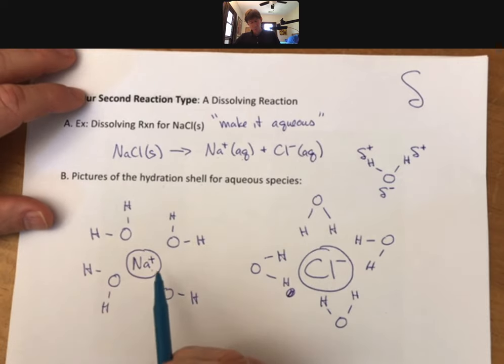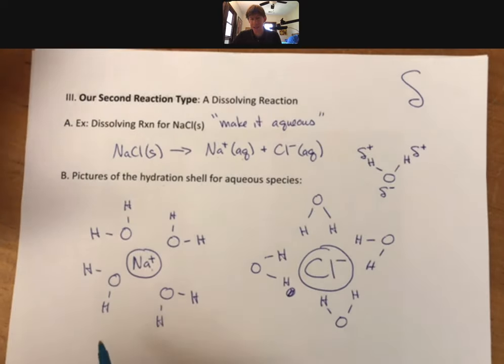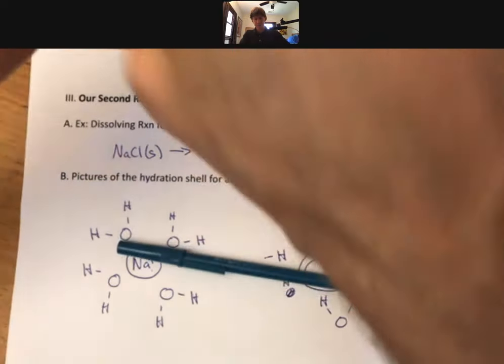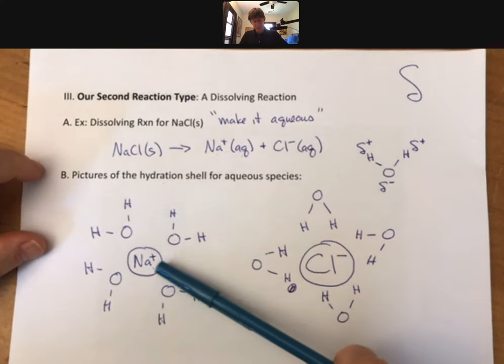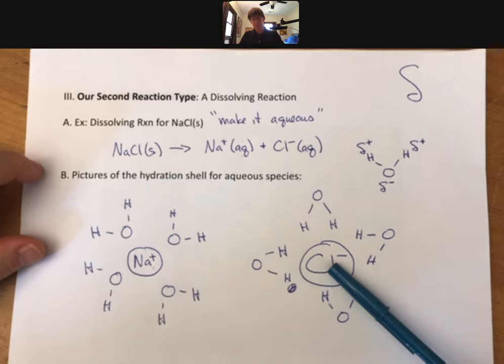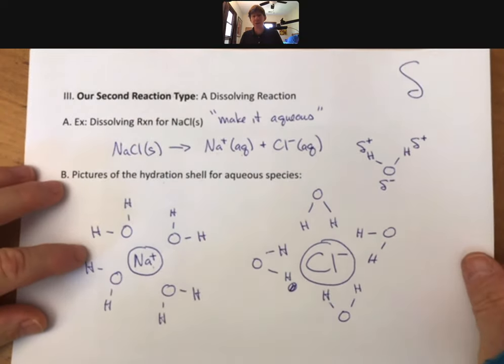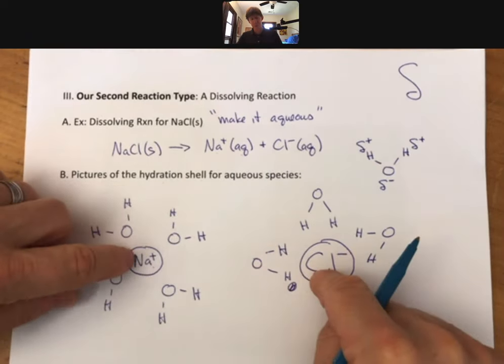That is a hydration shell for chloride ion. And that's why salt dissolves in water. All of these partial charges from the water molecules are able to pull apart the full positive and negative charge in the ionic compound sodium chloride. So why do things dissolve in water? It's because water can surround it and break ions apart.